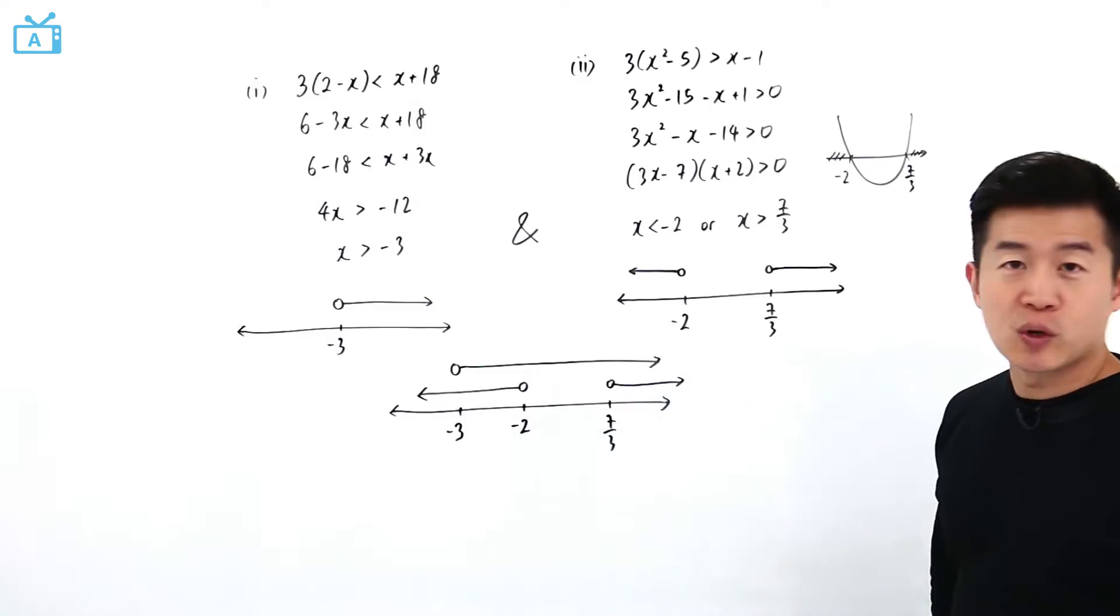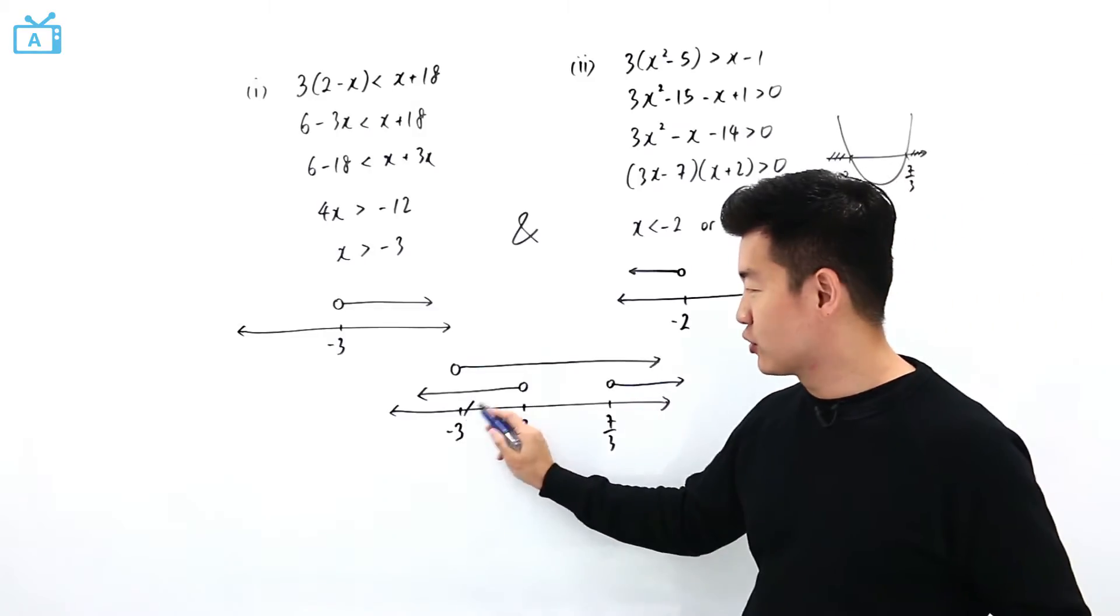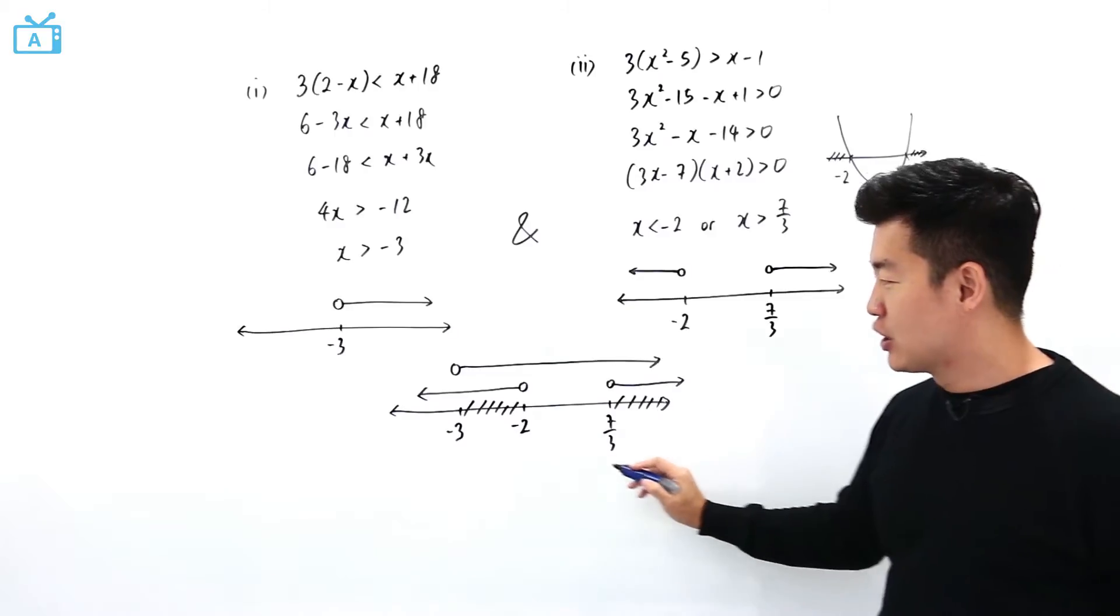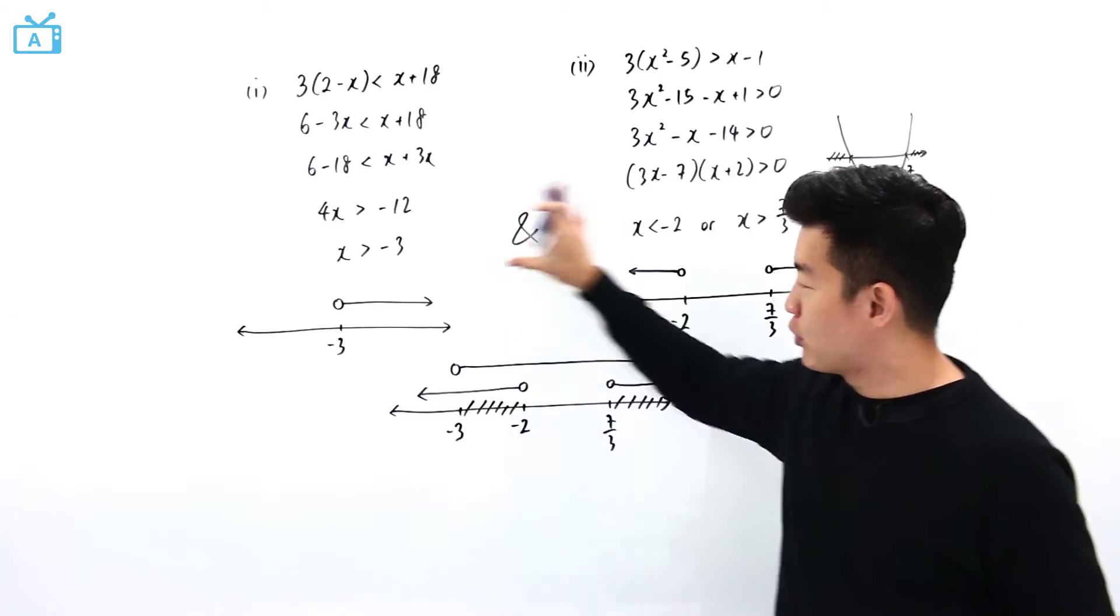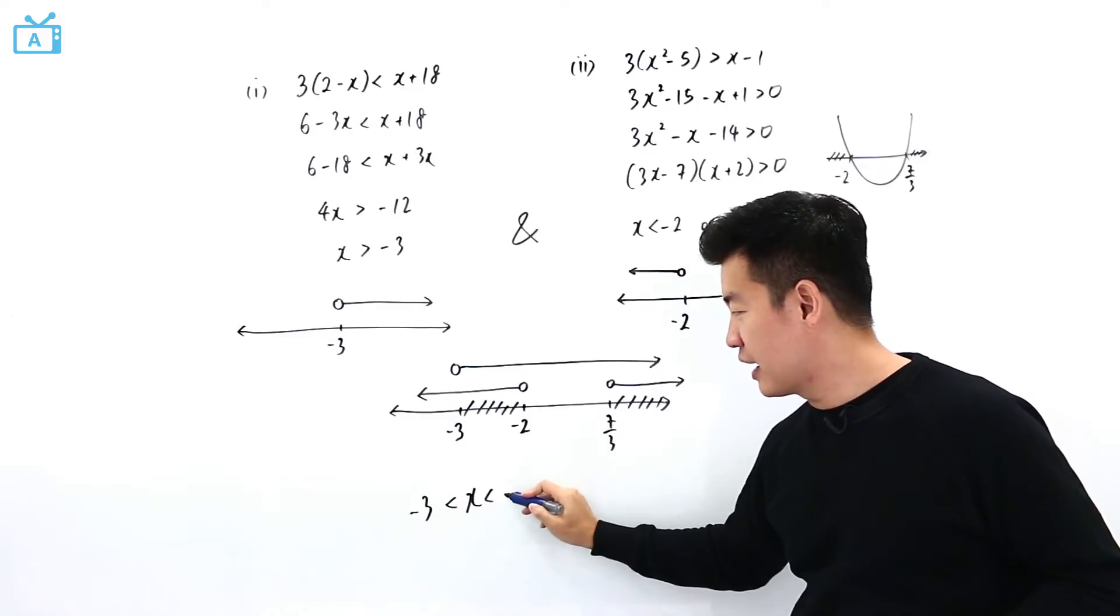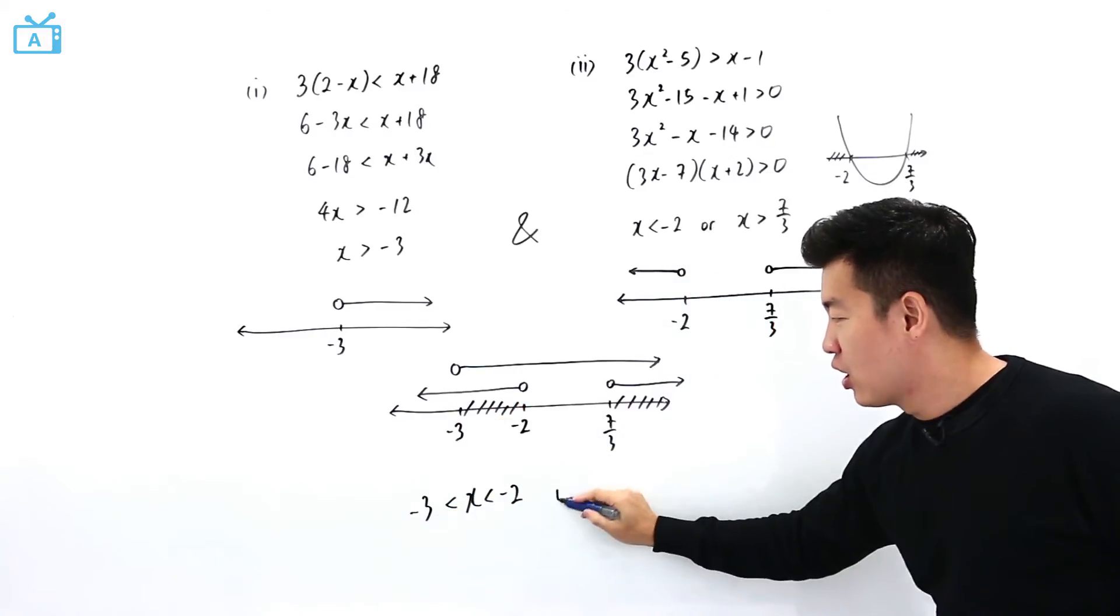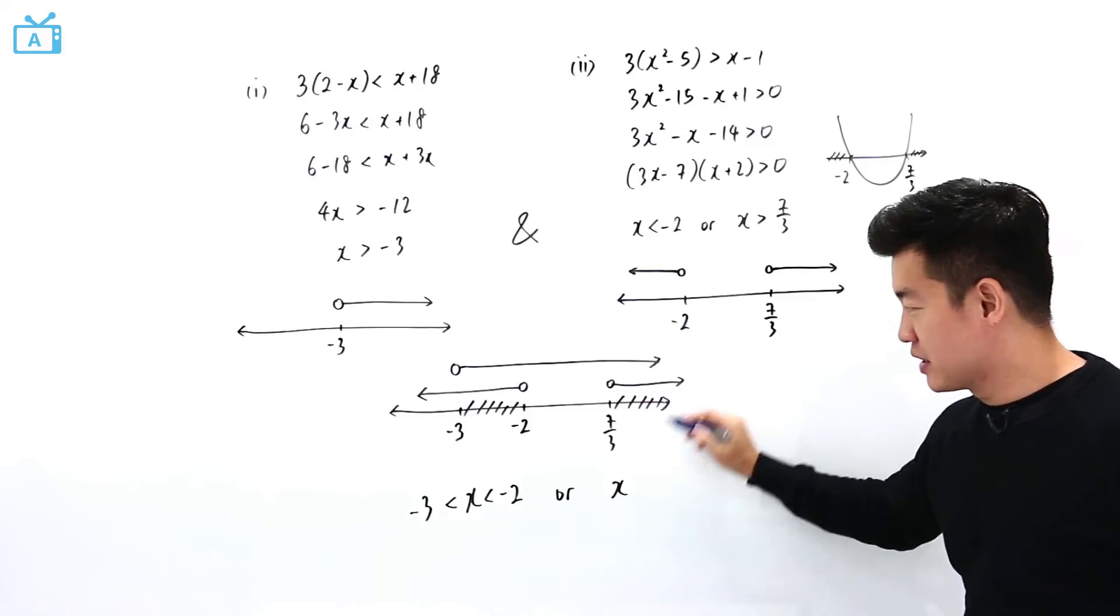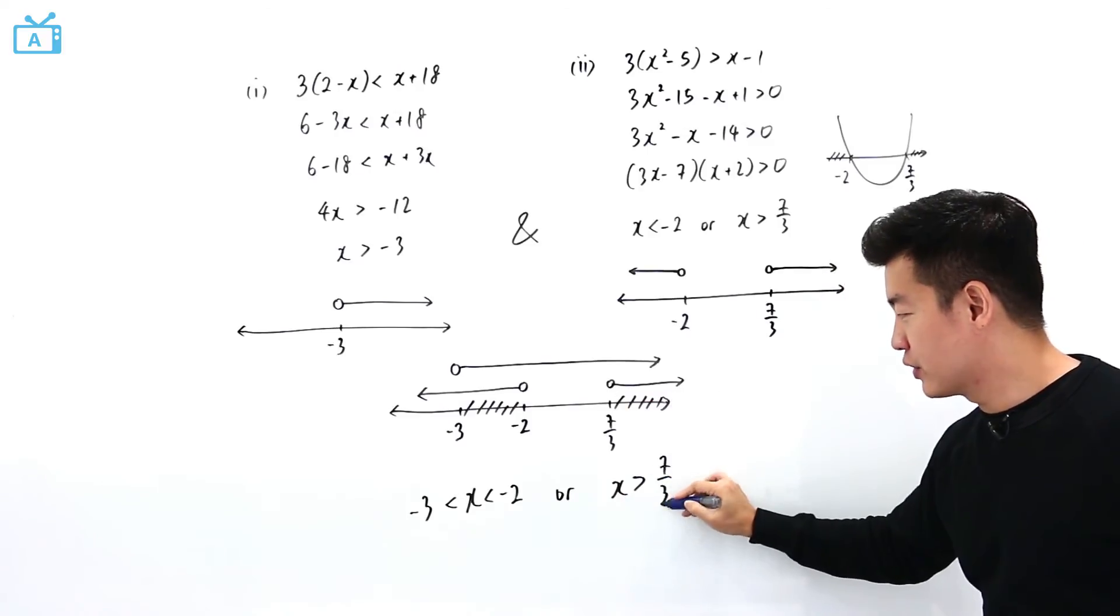And if I want to work on just the overlapping region, it is going to be this region here and this region here. So the value of x that satisfy both the inequality will be when x is between minus 3 and minus 2, this region, or when x is supposed to be bigger than 7 over 3.